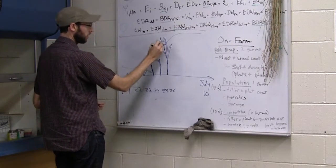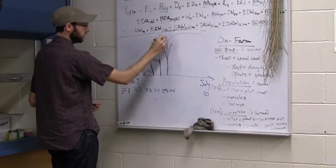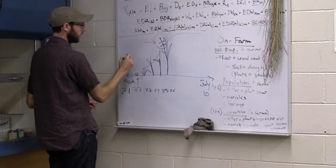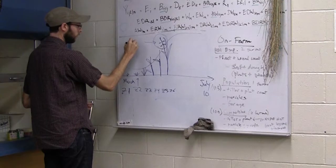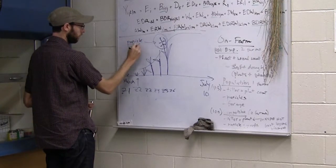And we've got all these reproductive structures on this seed head. And in oats, that seed head is called the panicle.